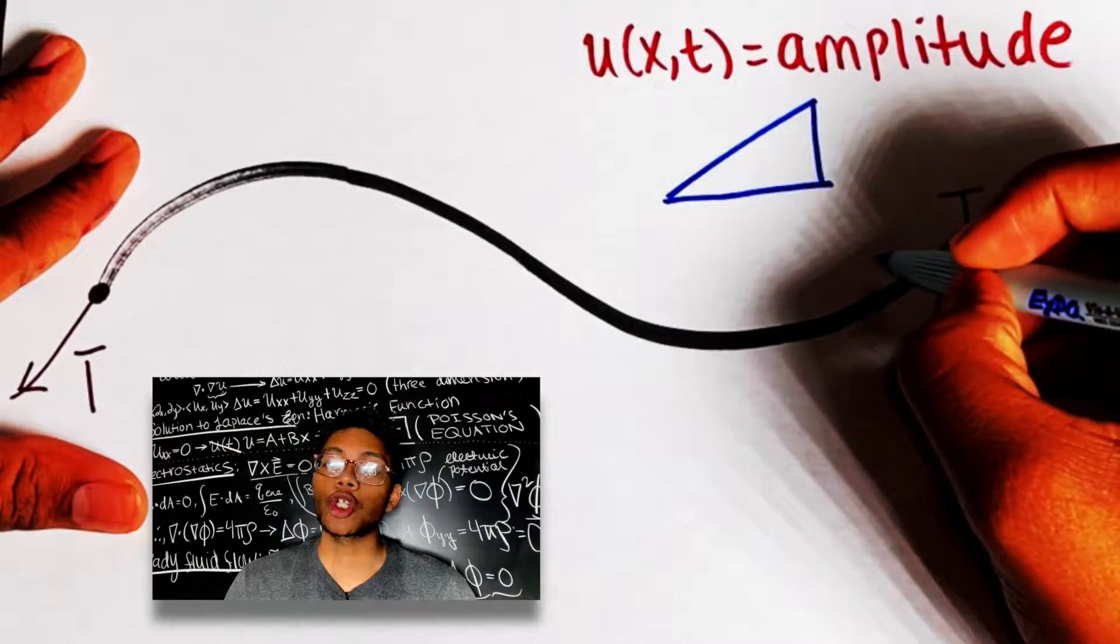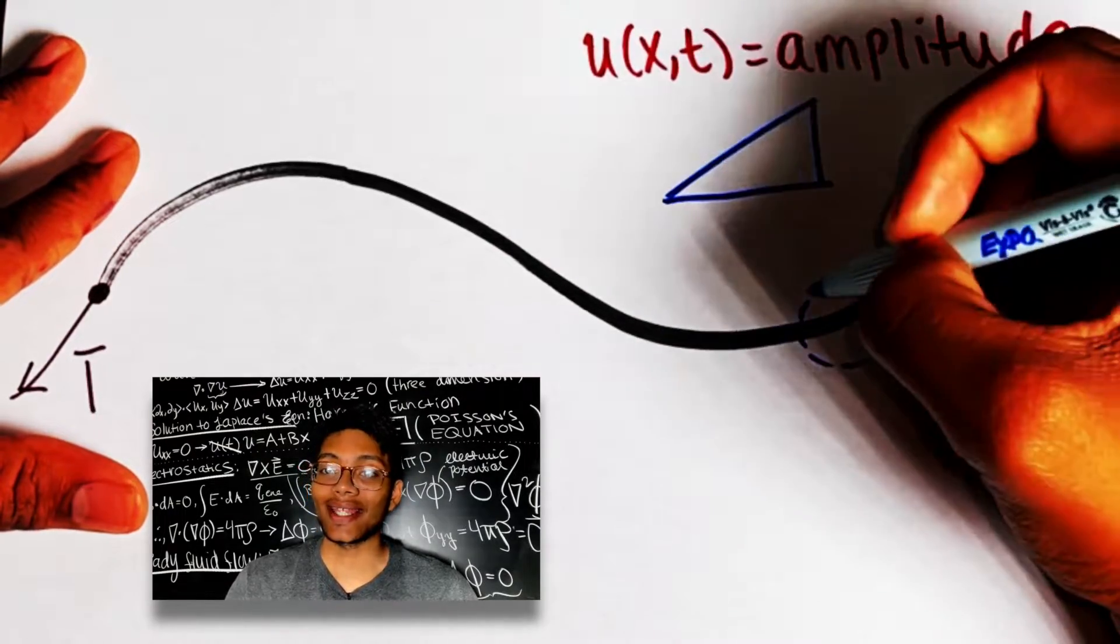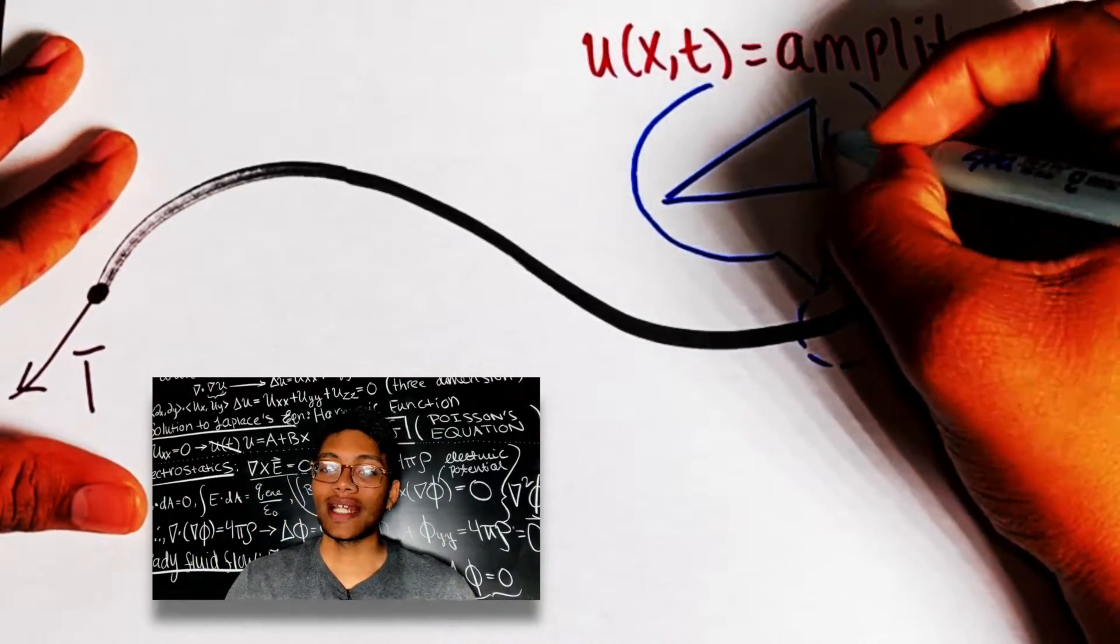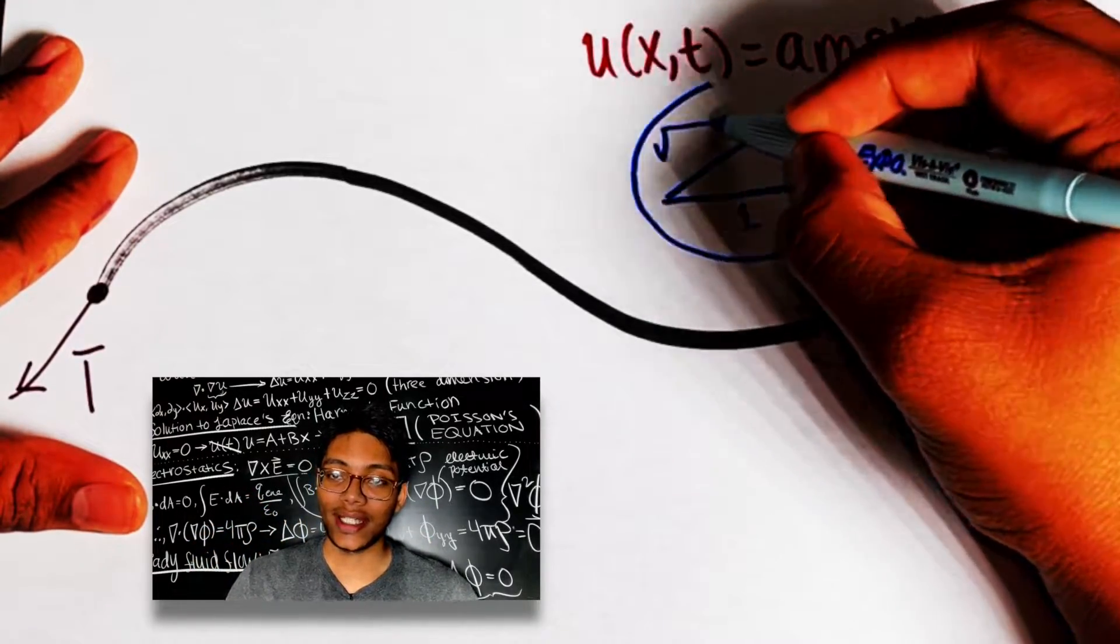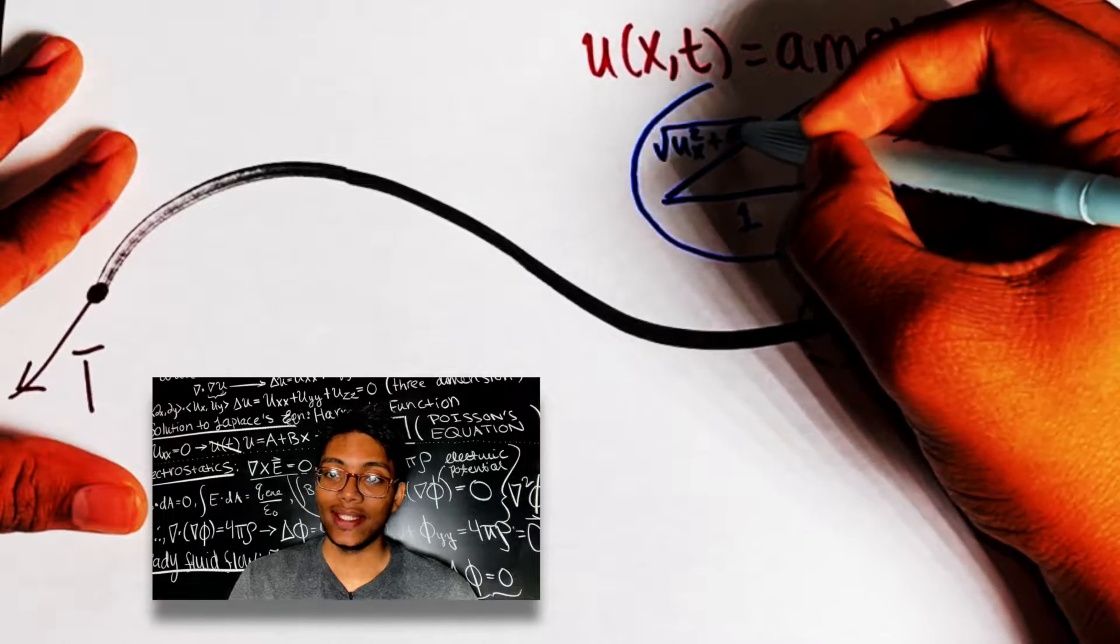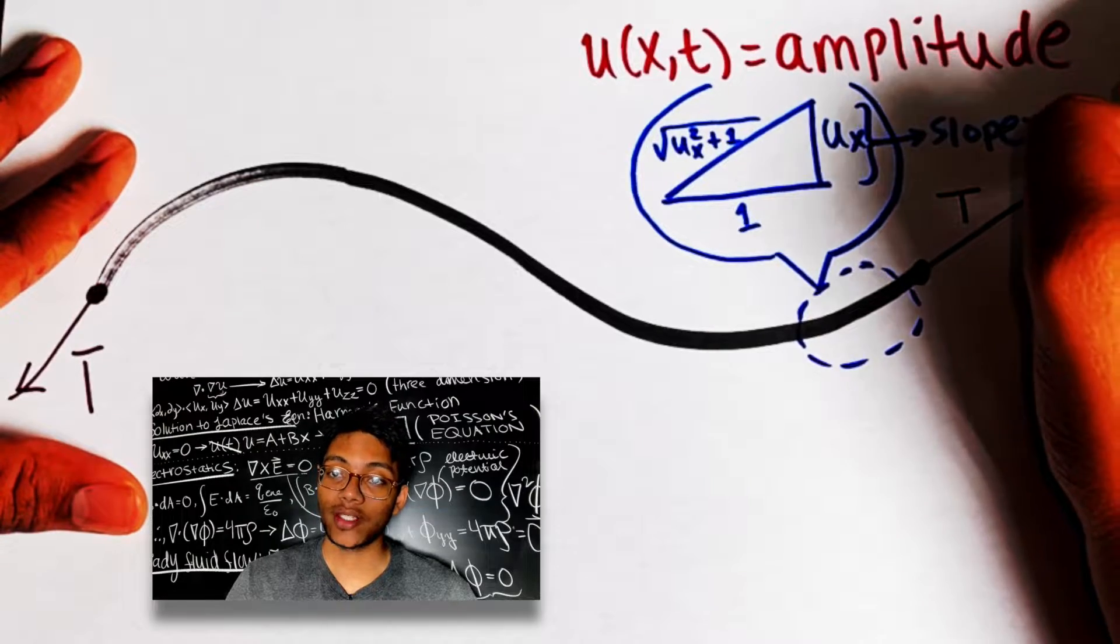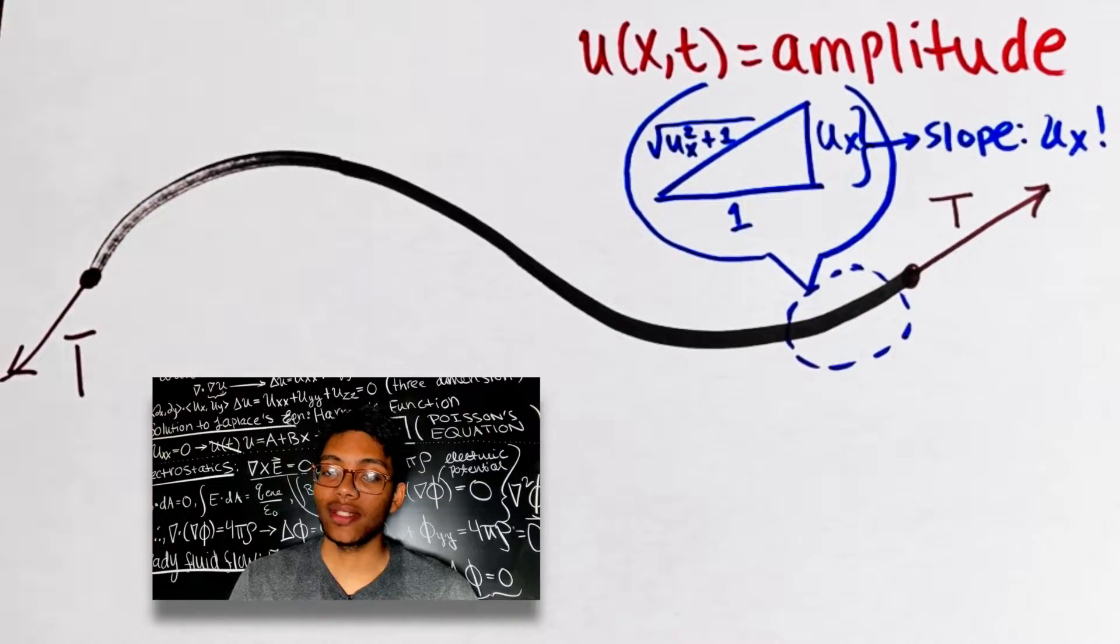The slope of the wave is just its partial derivative with respect to x. So we construct a triangle with a vertical side length of u_x and a horizontal side length of unity. And the hypotenuse of that right triangle is going to be the square root of u_x squared plus 1 via Pythagorean theorem.